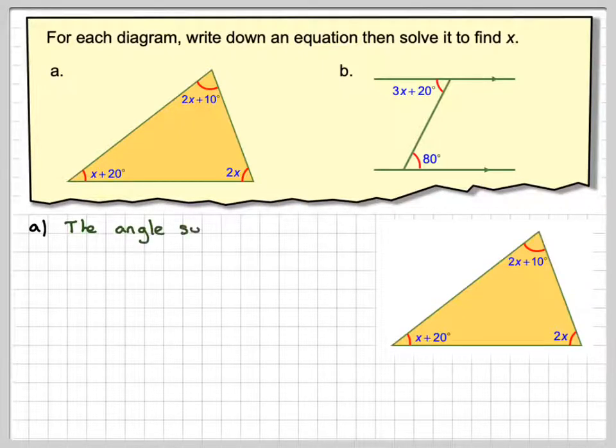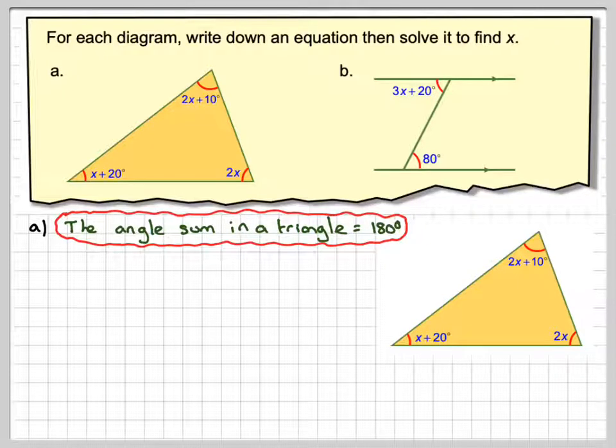In the first case we have a triangle, and we know the angle sum in a triangle is 180 degrees, so we use that to form an equation. We're going to start with x plus 20 plus 2x plus 2x plus 10 equals 180.